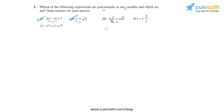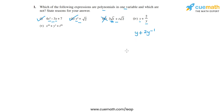In option three, the variable is t and the expression has the term √t, where the power of t is a non-integer, so option three is not a polynomial. Option four has y + 2/y as the expression. In the second term, 2/y, the power of the variable is minus one, because you can write 2/y as 2y to the power minus one. So option four is not a polynomial.